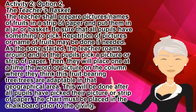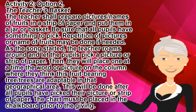Activity 2, Option 2 — The Teacher's Basket: The teacher shall prepare pictures or names of fruits on strips of paper and put them in a jar or basket. Be sure that all pupils have something to pick. Repetition of pictures or names of fruits may be done if needed. As the song starts, the teacher roams around and lets pupils pick a picture or strip of paper. They will then place the word or picture on the column where they think the fruit-bearing tree is adaptable in that geographical area.